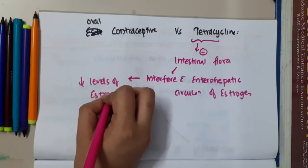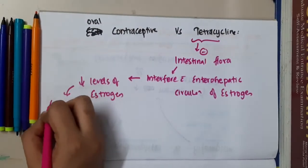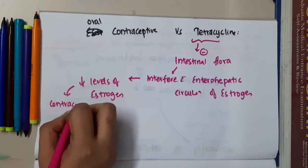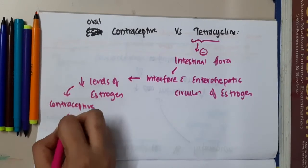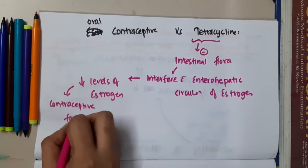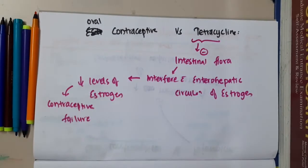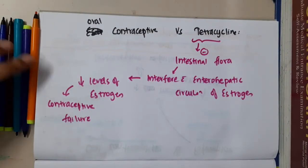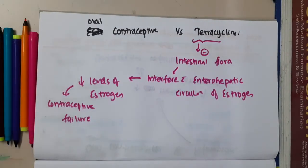Because of decreased levels of estrogen, this will result in contraceptive failure. So, this is about the oral contraceptives and tetracycline.